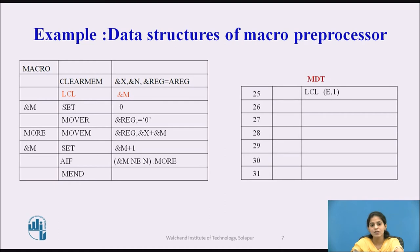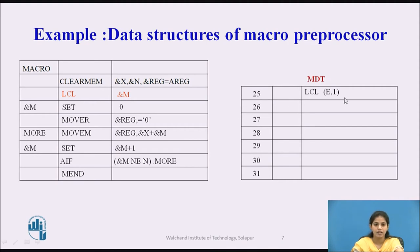So for &M, E indicates it is the expansion time variable, and 1 indicates the entry number of that symbol in EVN tab — since M was entered first, we specify 1. Similarly for the next statement &M SET 0, we again generate specification (E,1) for &M, followed by SET and 0.